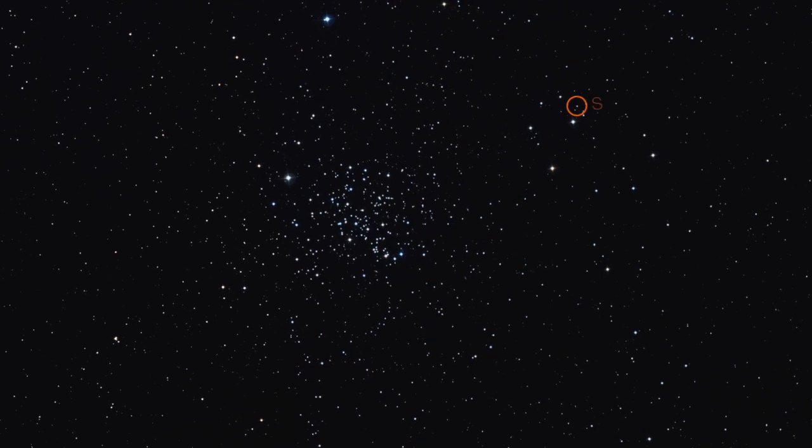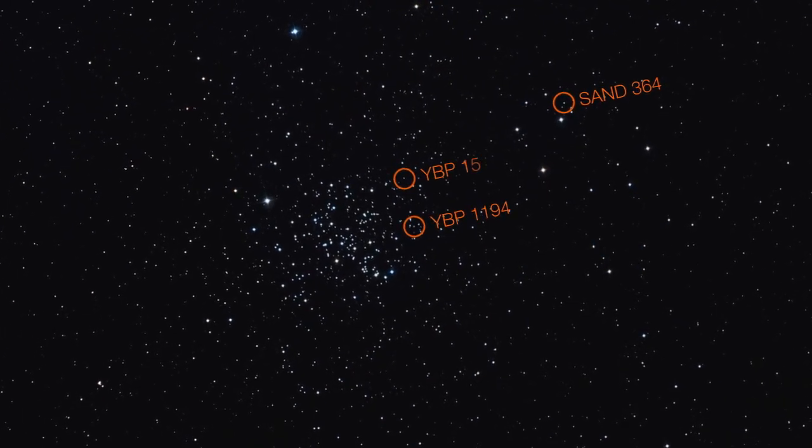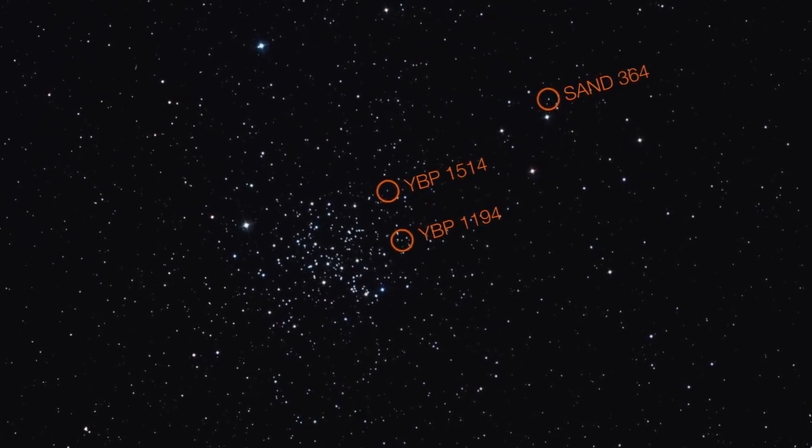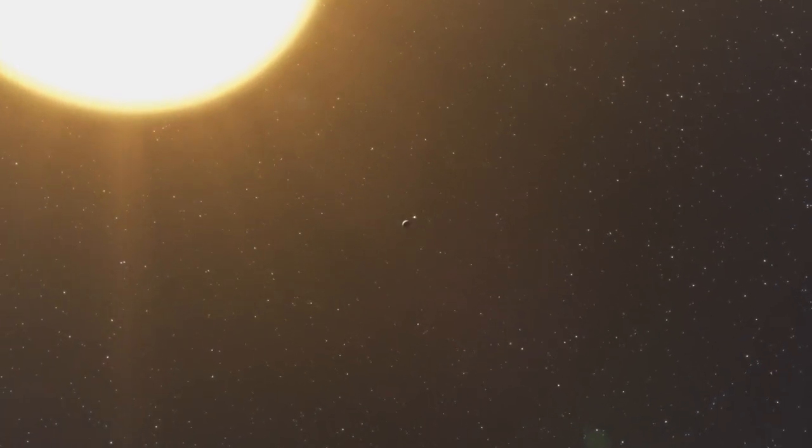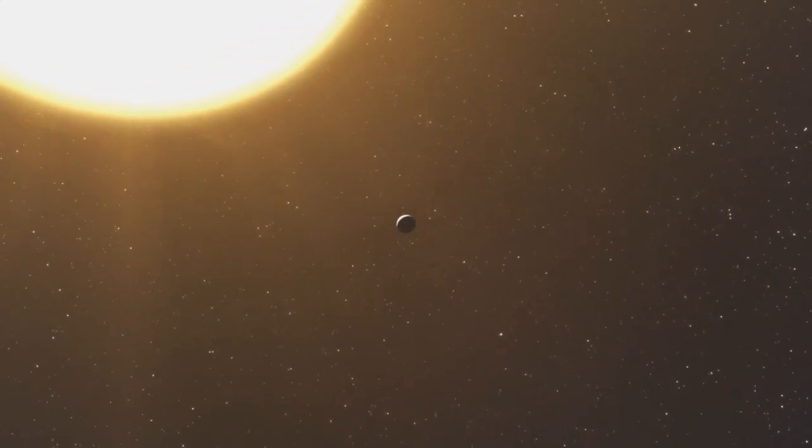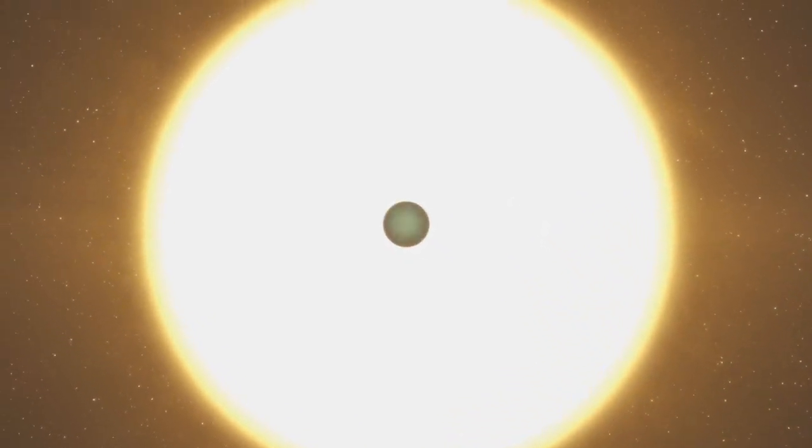Three planets were discovered in the cluster. Two of these planets orbit stars similar to the Sun, and one orbits a more massive and evolved red giant star. The first two planets both have about one-third the mass of Jupiter and orbit their host stars in seven and five days respectively.